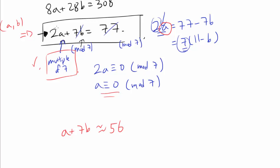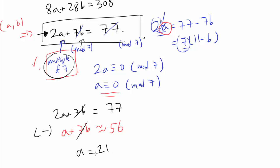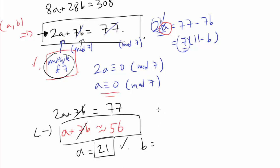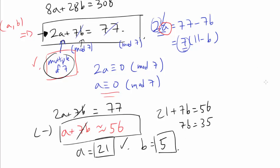Subtracting a + 7b ≈ 56 from the exact equation 2a + 7b = 77, the 7b terms cancel and we get a ≈ 21. Notably, a = 21 is indeed a multiple of 7, suggesting our approximation was accurate. With a = 21 substituted into a + 7b = 56: 21 + 7b = 56, so b = 5. It looks like a = 21 and b = 5 may be the solution.